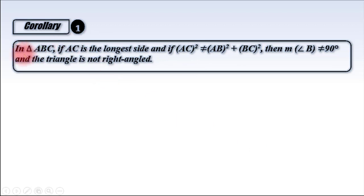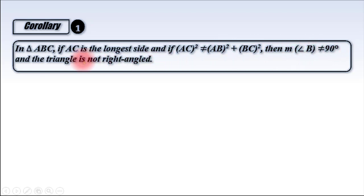Corollary 1: In triangle ABC, if AC is the longest side, and AC power 2 is not equal to AB power 2 plus BC power 2, then the measure of angle B must not equal 90 degrees, and the triangle is not a right angle triangle.